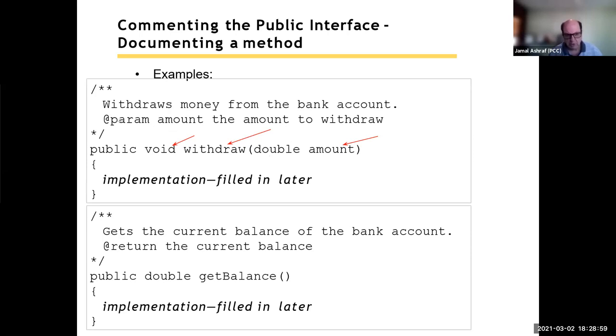Then I have a parameter called amount. I'm going to put @param amount. Then I explain what is this amount for. This amount is the amount to withdraw. I'm going to do the same thing again with my other methods.